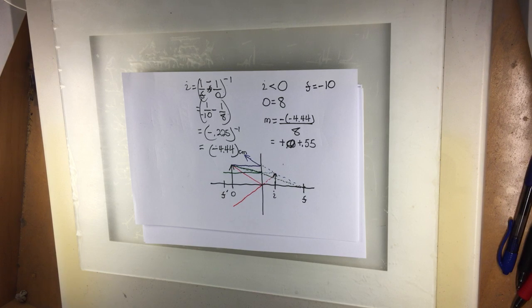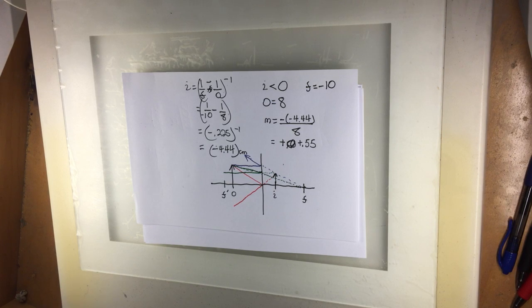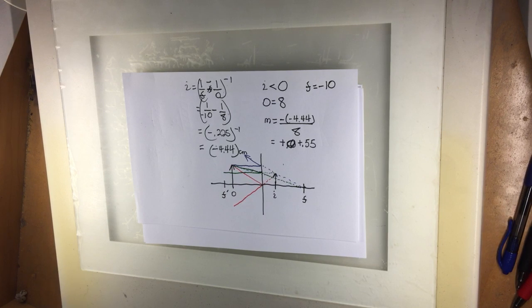For the two rays, I don't require dotted lines, though they do help. If it's a virtual image, you should use dotted lines. If it's a real image, you don't have to.